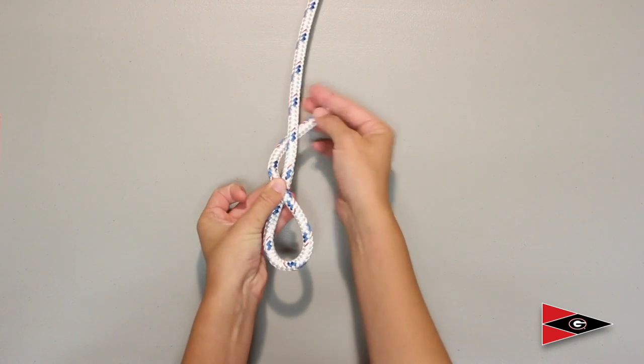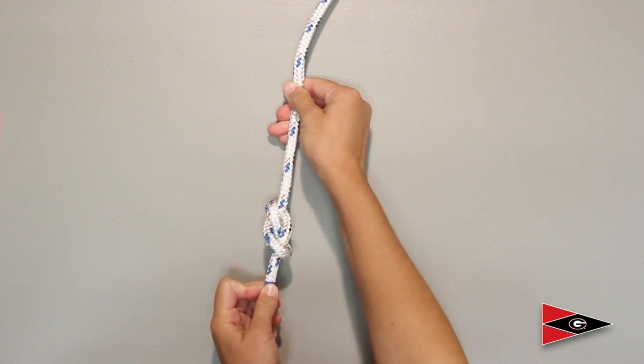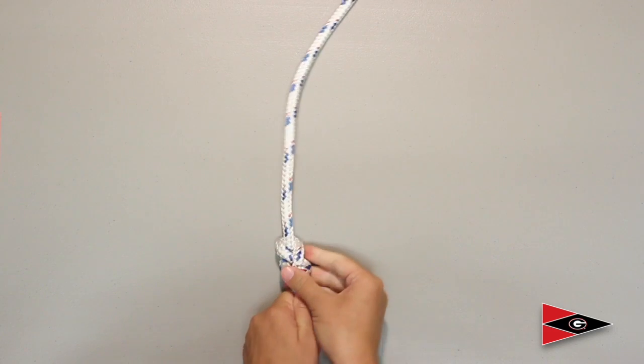And then you're going to cross the tail behind and then stick it back through the loop. Pull tight. And there you have your figure eight.